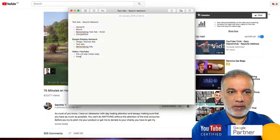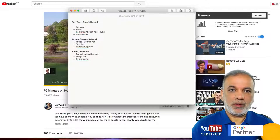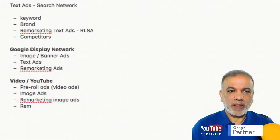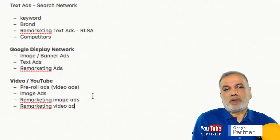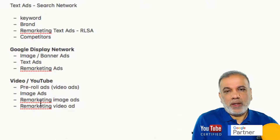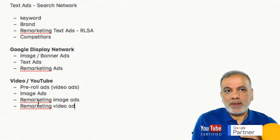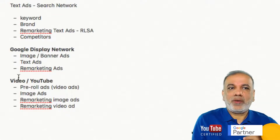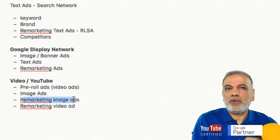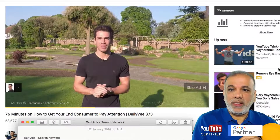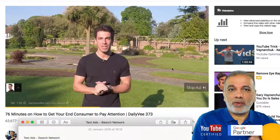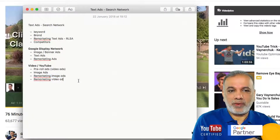On YouTube we also have image ads, as well as remarketing image ads and remarketing video ads. If someone watches a video on your YouTube channel, you can put that person into your remarketing list and tell Google to show your video ads on other people's videos. That is a very powerful strategy. You could have a video ad running there as well as a banner ad on the right-hand side — multiple ways to put ads in front of your audience.